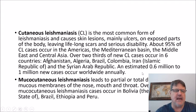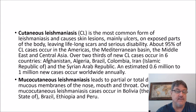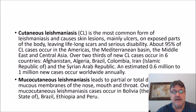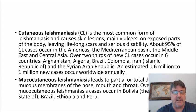Cutaneous leishmaniasis is the most common form and causes skin lesions — mainly ulcers on exposed parts of the body — leaving lifelong scars and serious disability. About 95% of cutaneous leishmaniasis occurs in the Americas, the Mediterranean basin, the Middle East, and Central Asia. Over two-thirds of new cases occur in six countries: Afghanistan, Algeria, Brazil, Colombia, Iran, and Syria. There are an estimated 0.6 to 1 million new cases occurring annually across the globe.